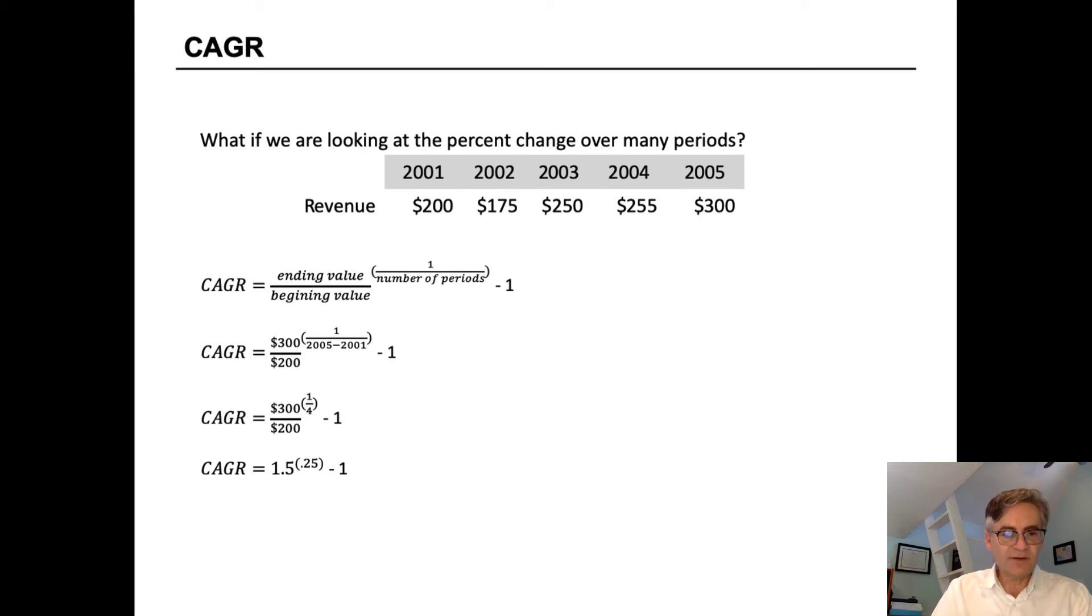We can simplify that to one and a half raised to the exponent of one quarter or 0.25, all minus one. And if we do the calculation on that, that will give us 1.107 minus one, or 0.107, which is 10.7%.